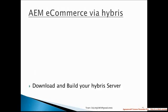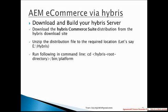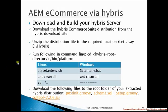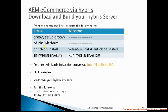Once you upload these two packages through Package Manager in AEM, you need to download and build your Hybris server. Directly download the Hybris commercial distribution from the Hybris site, unzip it, go to the main folder, then go to the bin platform through command prompt. Once there, run the appropriate commands — under Linux there are specific commands, and under Windows there are different ones. I will be showing you a practical example of all these just after this video.